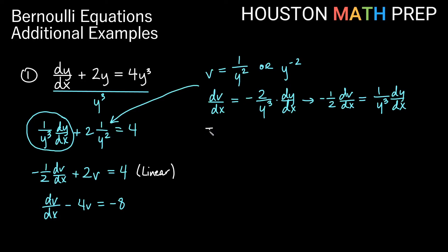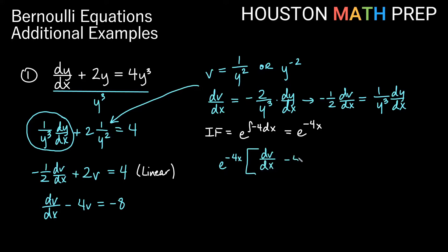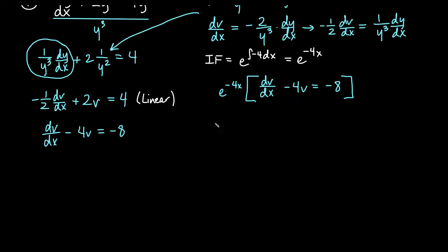Now we find the integrating factor. The integrating factor is e to the integral of whatever is in front of v, which is negative 4 dx. The integral of negative 4 is negative 4x, so our integrating factor is e to the negative 4x. We multiply the entire equation by that integrating factor: e to the negative 4x times dv/dx minus 4v equals negative 8 e to the negative 4x.